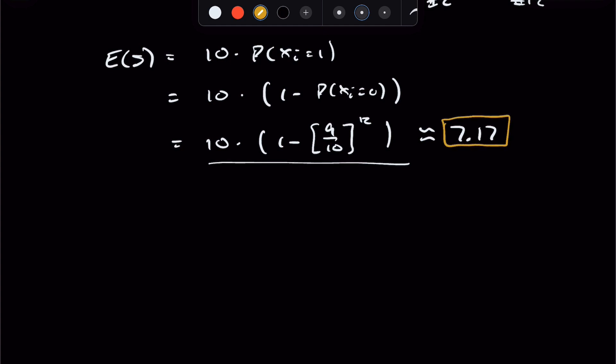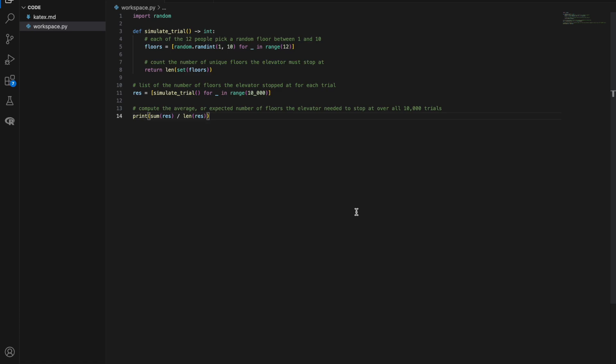But if you're still a little bit skeptical, I understand. And that's why we have a coding simulation to actually verify using randomized data that this expression is actually accurate for the real world. All right guys, so here's our coding simulation. Right here, we have our simulate trial function, which for the 12 people right there, we are randomly picking a floor for them to get off at uniformly at random between 1 and 10. And then for the trial, we actually return the number of unique floors that the elevator stops at. That's what the set function does, is that it gets rid of duplicates. And then we return the length of this list without duplicates, the number of unique floors the elevator stops at.